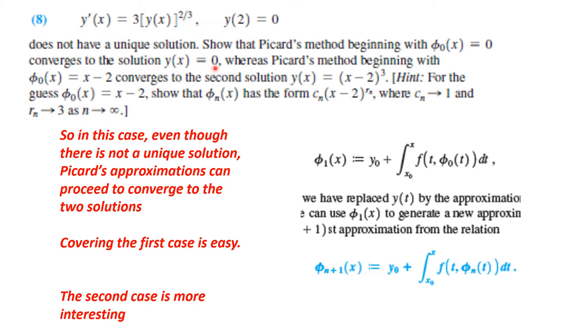If we begin with a different guess, φ_0(x) = x - 2, this converges to y(x) = (x - 2)^3. This certainly satisfies the equation because if I take the derivative I get 3(x - 2)^2, and if I do y(2) = 0, I get this. This is a solution, and I wanted to show that Picard's method beginning with this does converge to that solution.